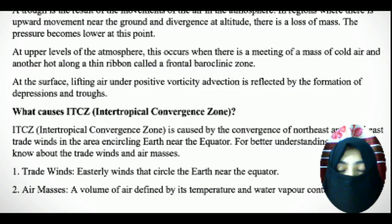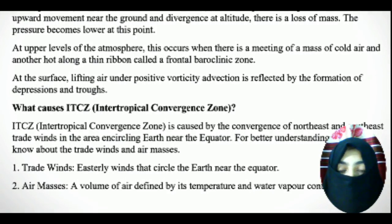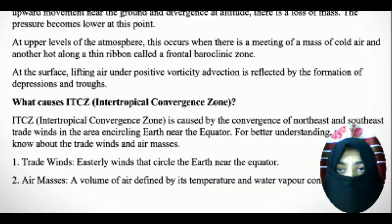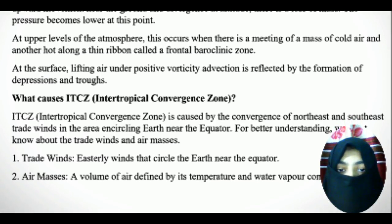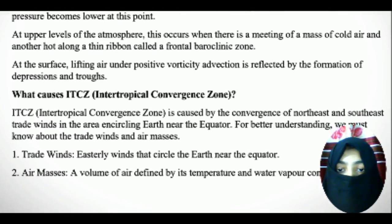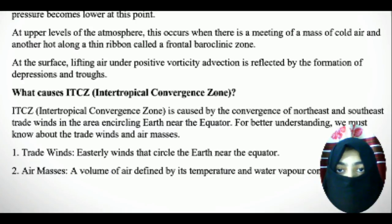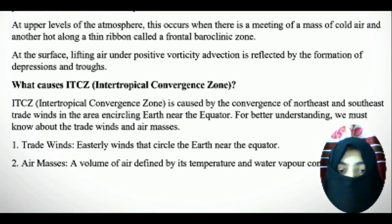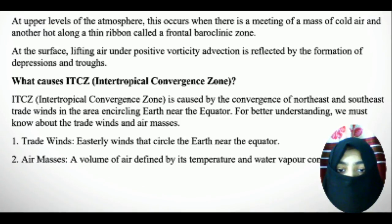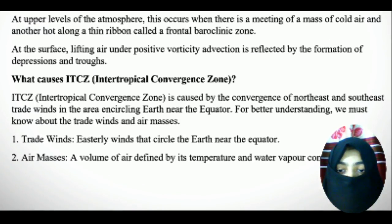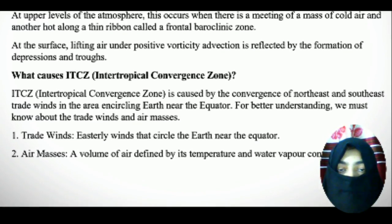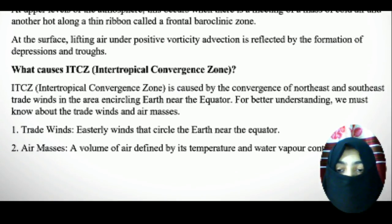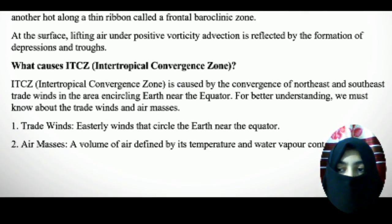What causes the Intertropical Convergence Zone? The ITCZ is caused by the convergence of northeast and southeast trade winds in the area encircling the Earth near the equator. We must know about trade winds and air masses. Trade winds are steady winds that circle the Earth near the equator. An air mass is a volume of air defined by its temperature and water vapor content.